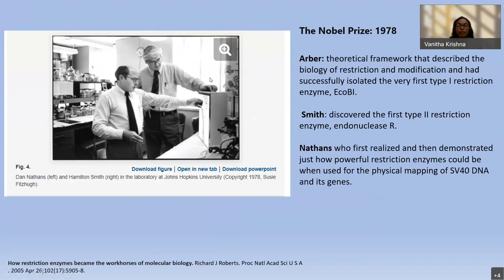The Nobel Prize for demonstrating how powerful restriction enzymes are was awarded in 1978 to Professor Nathans. Although the initial work was done by Arber and Smith — Arber providing the theoretical framework of restriction and modification biology, and Smith being the first person who discovered the type 2 restriction enzyme — Nathans was the first person who demonstrated how powerful these restriction enzymes could be, especially when he did physical mapping using SV40 (Simian Virus 40) DNA and its genes.